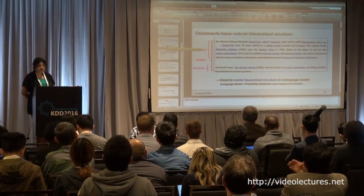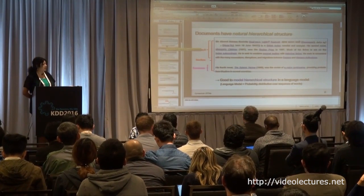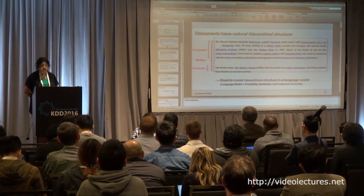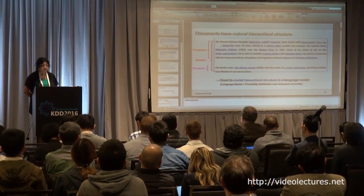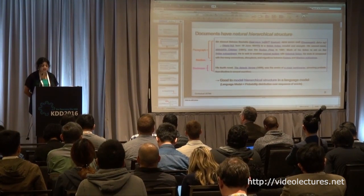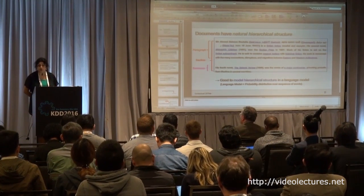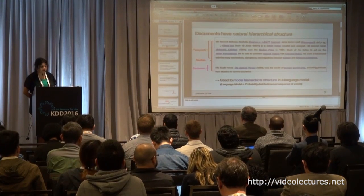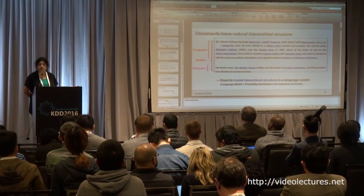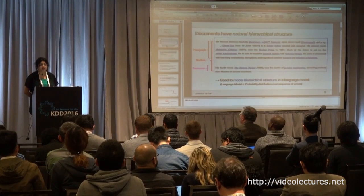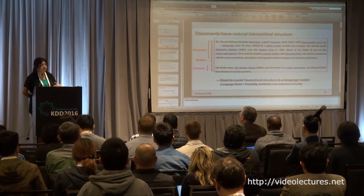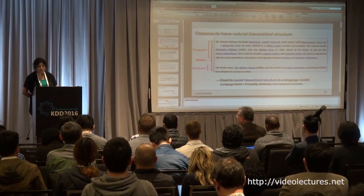What is the motivation for our work? If you look at an example, a document usually has sentences, sections, and paragraphs. Typical language models take into account the probability distribution over a sequence of words. But we want to see: can we incorporate topics that we can get from paragraphs and sentences into the language model? And what kind of improvement do we get?